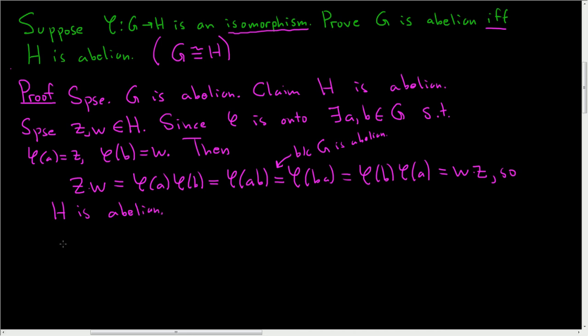So that takes care of one direction, let's prove the other one. So suppose H is abelian, and the claim this time is that G is abelian. So claim: G is abelian.